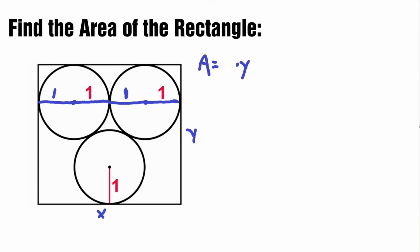We have our x value, and now what we need to find is our y value. Our y value is this side length here, and it includes this radius here with the value of 1. And this radius part here is also equal to 1.